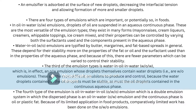There are four types of emulsion which are important in foods. First is the oil-in-water emulsion, where droplets of oil are suspended in an aqueous continuous phase. These are the most versatile of emulsion types and exist in many forms like mayonnaise, cream liqueurs, creamer, whippable topping, and ice cream mixes. Their properties can be controlled by varying both the surfactant used and the components present in the aqueous phase.